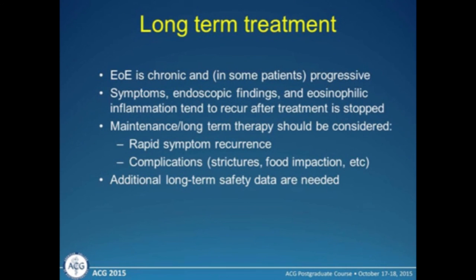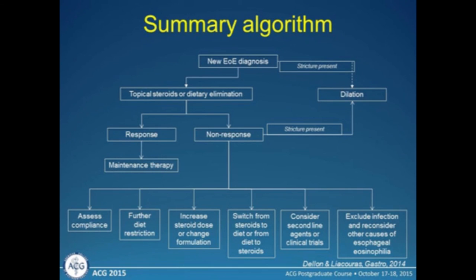A couple words about long-term treatment. This is a chronic disease, and symptoms, findings, and inflammation recur after treatment. Therefore, maintenance therapy may make sense, and we're in the early days of this. Consider maintenance therapy for rapid symptom recurrence or complications such as stricture or food impaction — typically at one-half to one-fourth the initial therapy dose. The summary algorithm: if you have a new EOE diagnosis with a tight stricture, dilate it. Then do topical steroids or dietary elimination. If there's a response, consider maintenance therapy. If non-responsive with a tight stricture, dilate. If neither worked, try the other approach you haven't tried — switch from steroids to diet or vice versa.